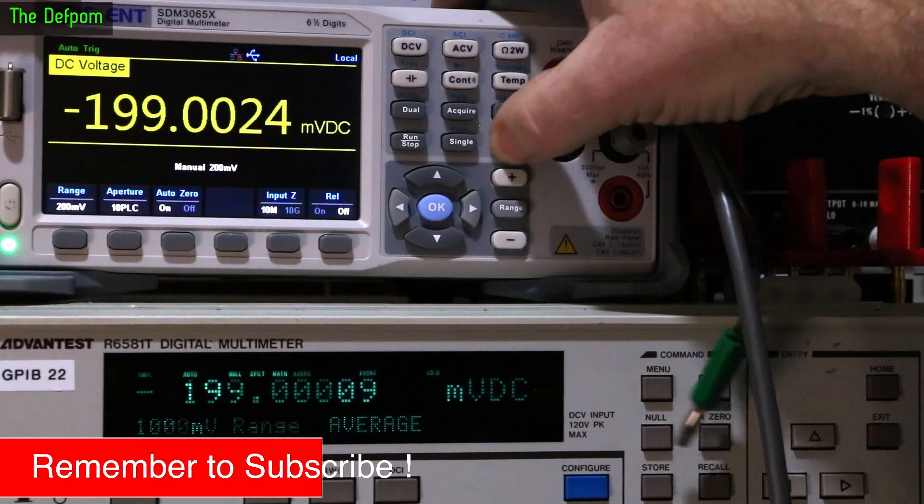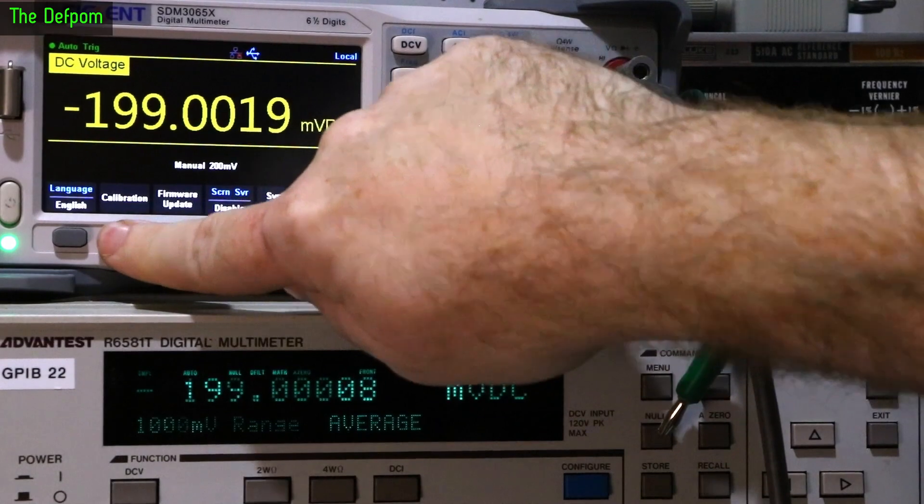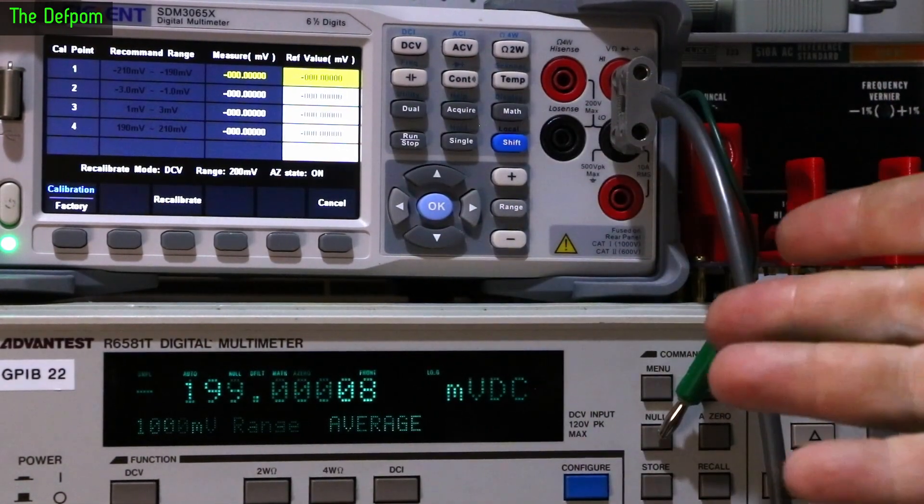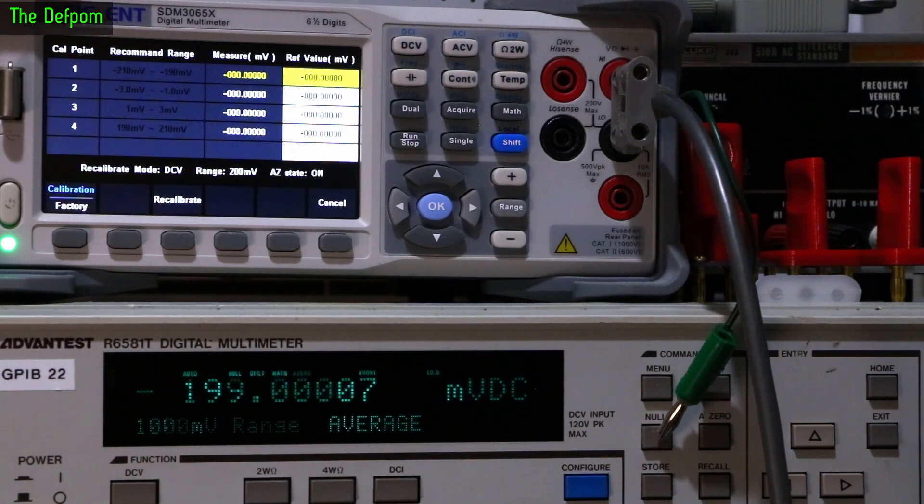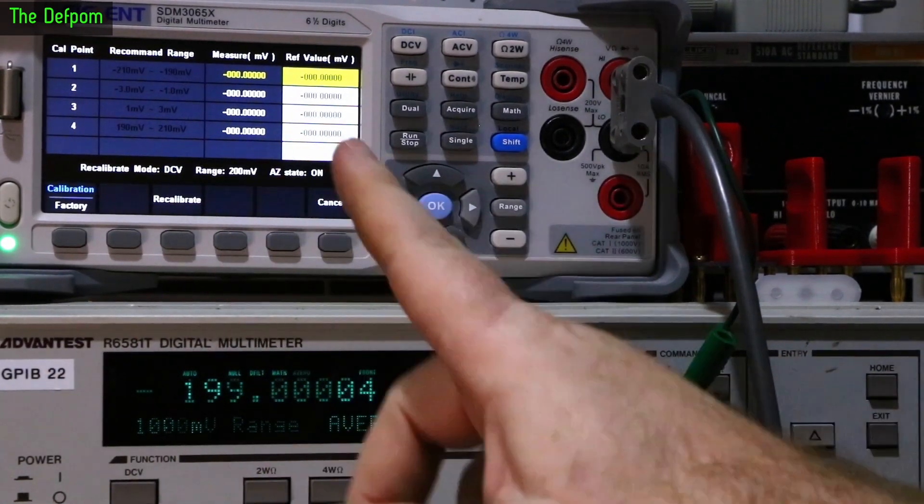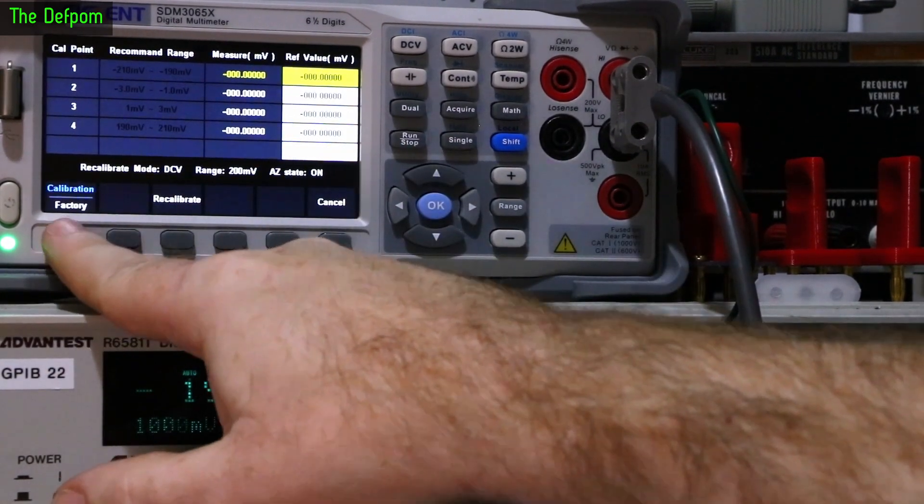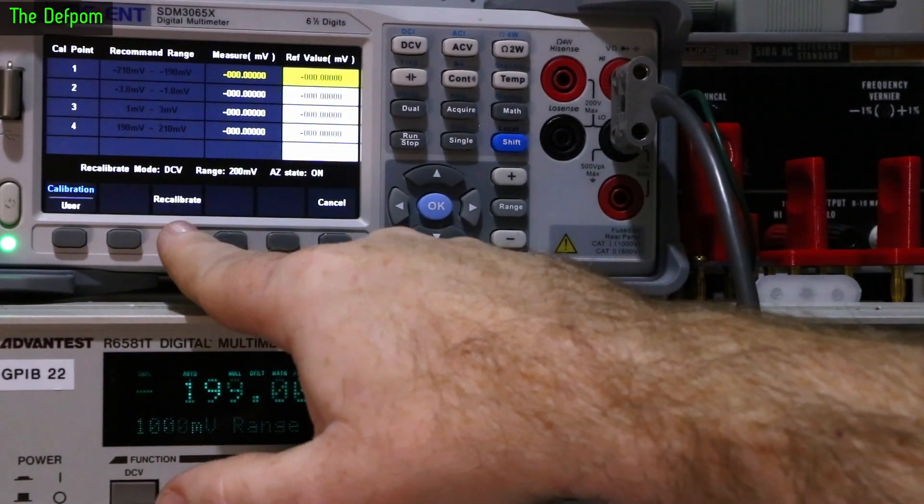I go shift, utility first, system setup, calibration. This is once you've got the newer firmware installed - firmware 3.01.01.12 R1 or newer. Here's the calibration screen for factory calibration. If you want to use user calibration, you come in here to user recalibrate, then push on recalibrate.